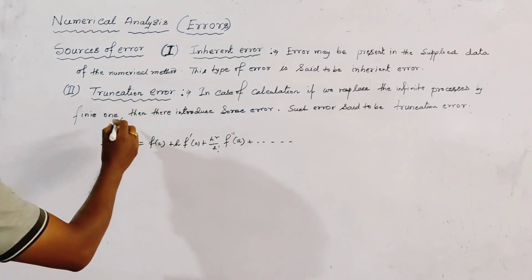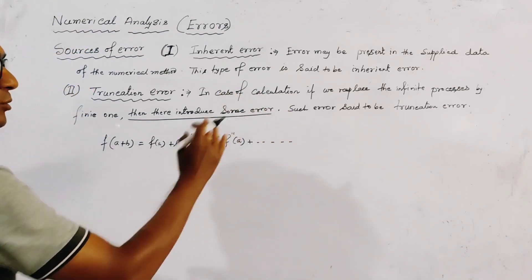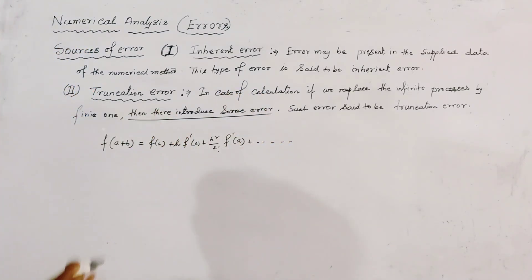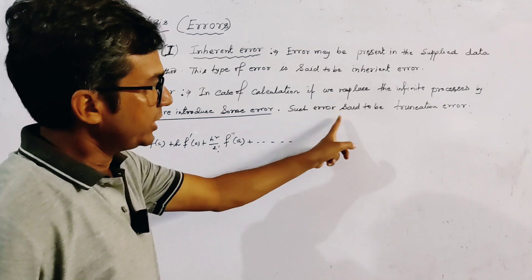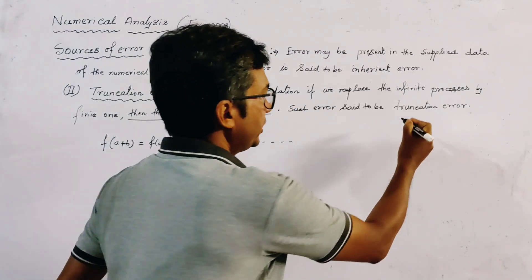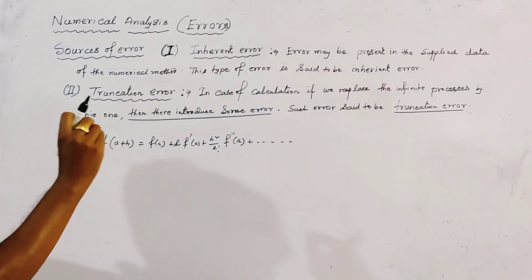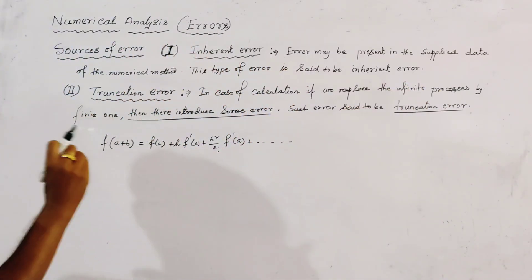Then here we introduce some error by truncation of some term. So this type of error that enters in this numerical method is said to be truncation error. This is the second source of error or second type of error.